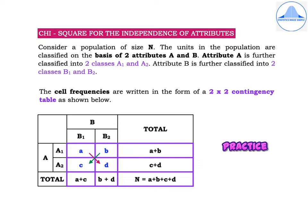Let us first consider a population of size N. The units in the population are classified on the basis of two attributes A and B. An attribute is a qualitative characteristic which varies from unit to unit. Attribute A is further divided into two classes A1 and A2, and attribute B is further classified into two classes B1 and B2.